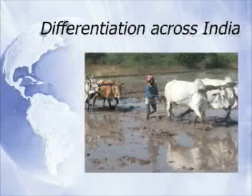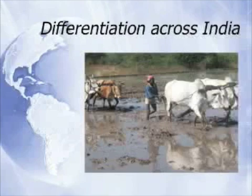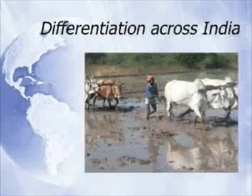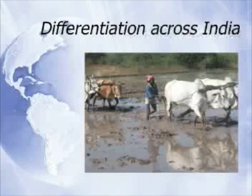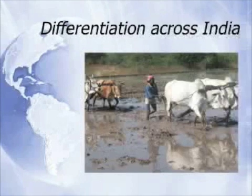So we do have that kind of data, and it shows enormous variation. It also shows a great deal of divergence — it's not always the areas of high income that have high human development achievements.